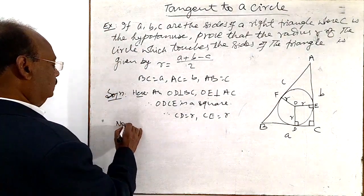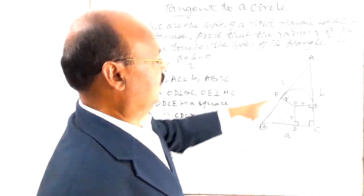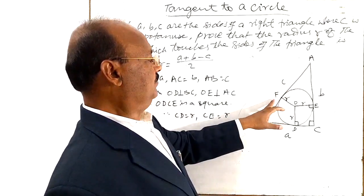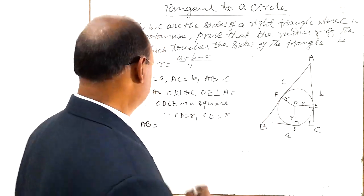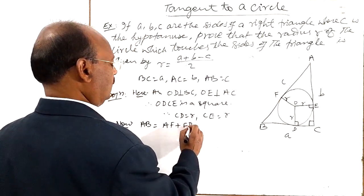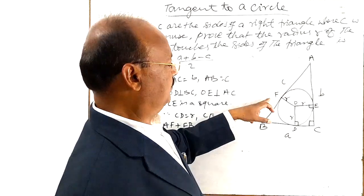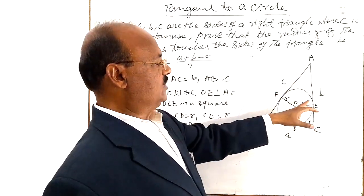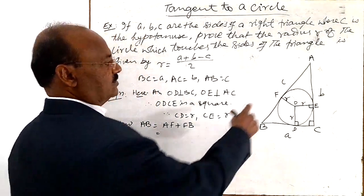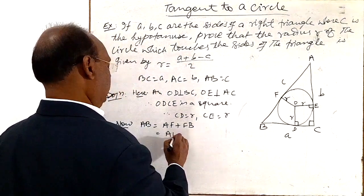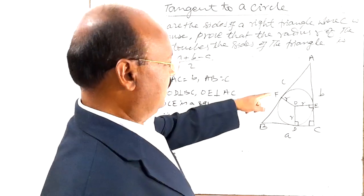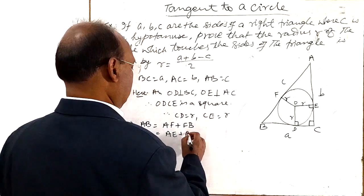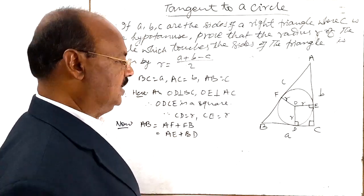Now, let us start with AB. So this AB can be written as AF plus FB. And this AF is equal to AE. Because length of tangents from external point to a same circle are equal in length. So therefore, in place of AF, we can write AE. And similarly, in place of FB, we can write BD. Length of tangents from external point are equal.